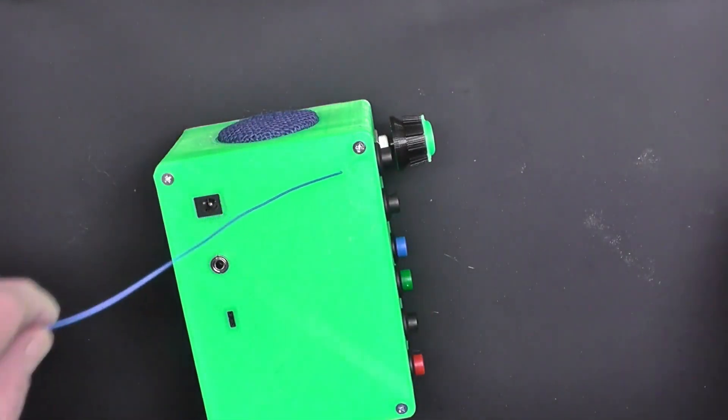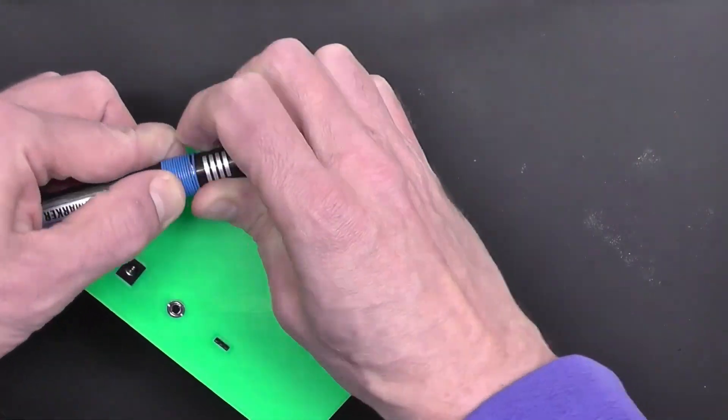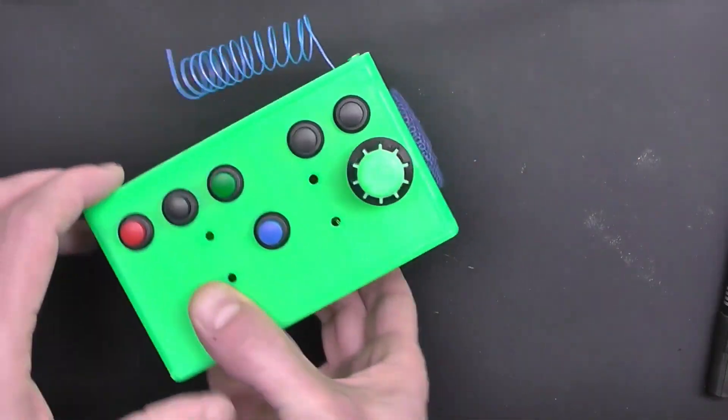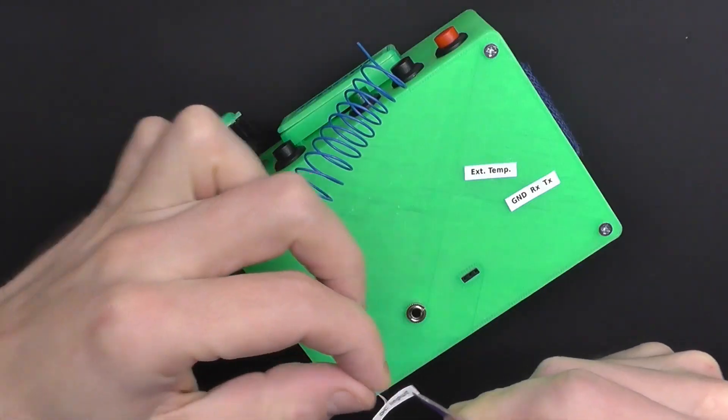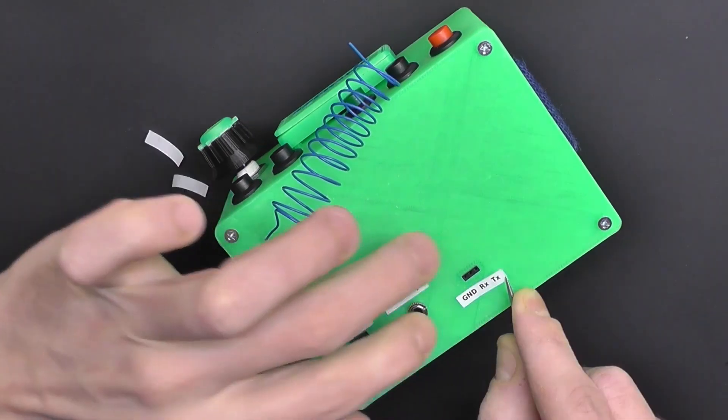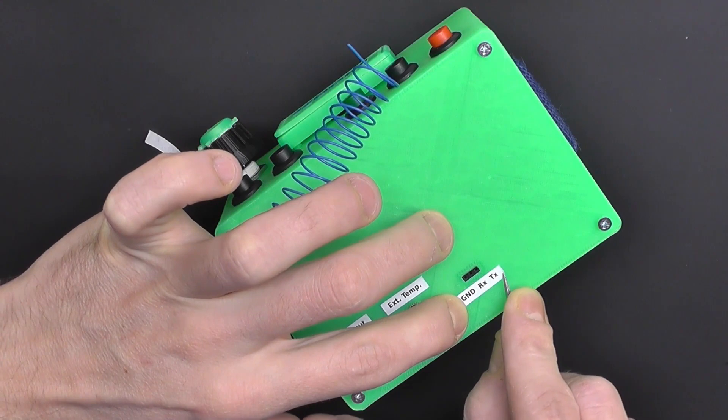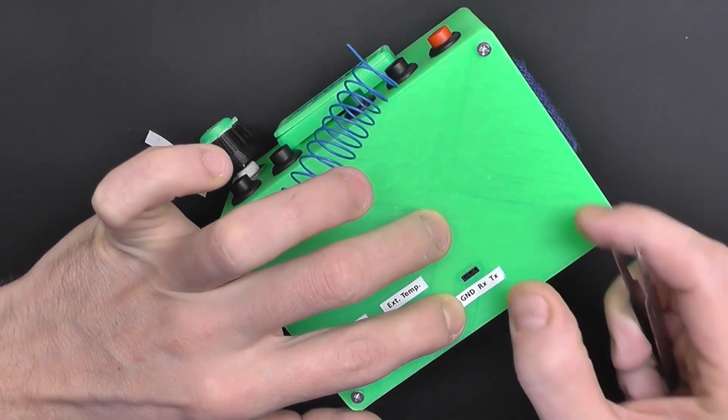It's always a good idea to place small labels here on the backside, especially for this UART header, because you will probably forget which one of these pins is the RX, TX or the ground pin.